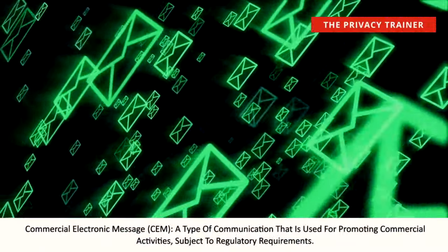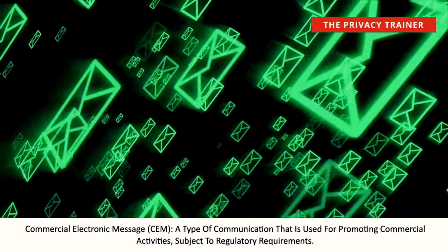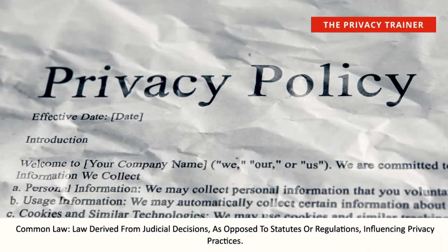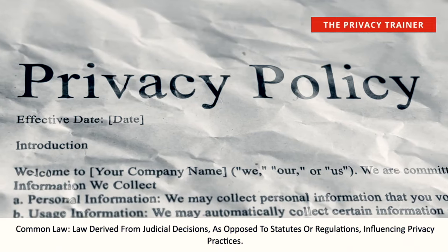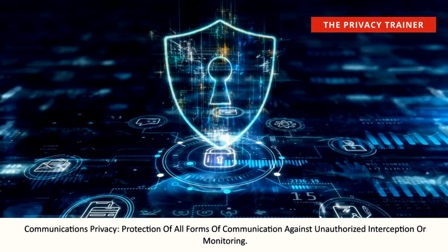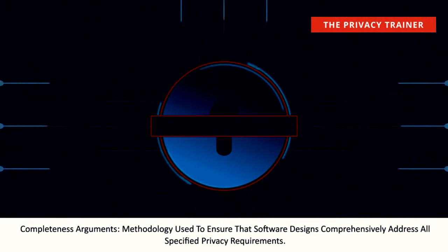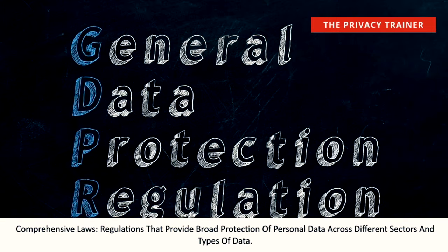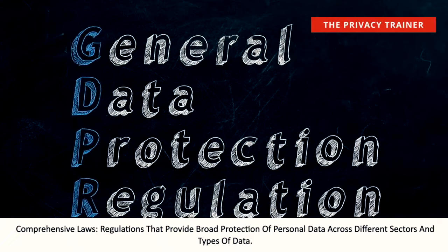Commercial electronic message, CEM. A type of communication used for promoting commercial activities, subject to regulatory requirements. Common law. Law derived from judicial decisions, as opposed to statutes or regulations, influencing privacy practices. Communications privacy. Protection of all forms of communication against unauthorized interception or monitoring. Completeness arguments. Methodology used to ensure that software designs comprehensively address all specified privacy requirements. Comprehensive laws. Regulations that provide broad protection of personal data across different sectors and types of data.